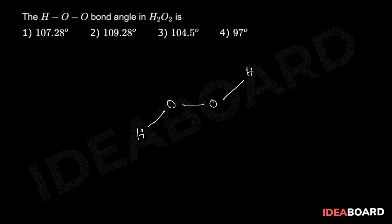The oxygen-oxygen bond length is 1.48 angstrom units, and the hydrogen-oxygen-oxygen bond angle is 97 degrees on both sides. So the HOO bond angle is 97 degrees, and the fourth option is correct.